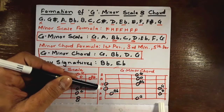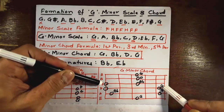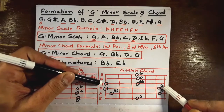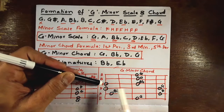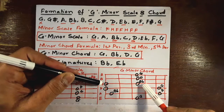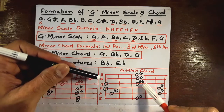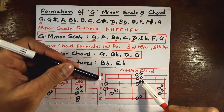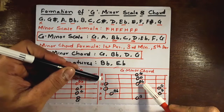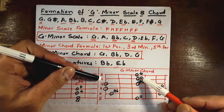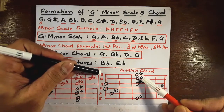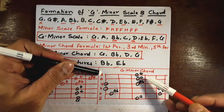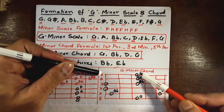On the D string we have the D note as open note and a G note. This is the first through fifth fret area. On the G string — the third string — we have a G note as open note and a B flat. On the B string — the second string — we have a D note, and on the first E string we have a G note.